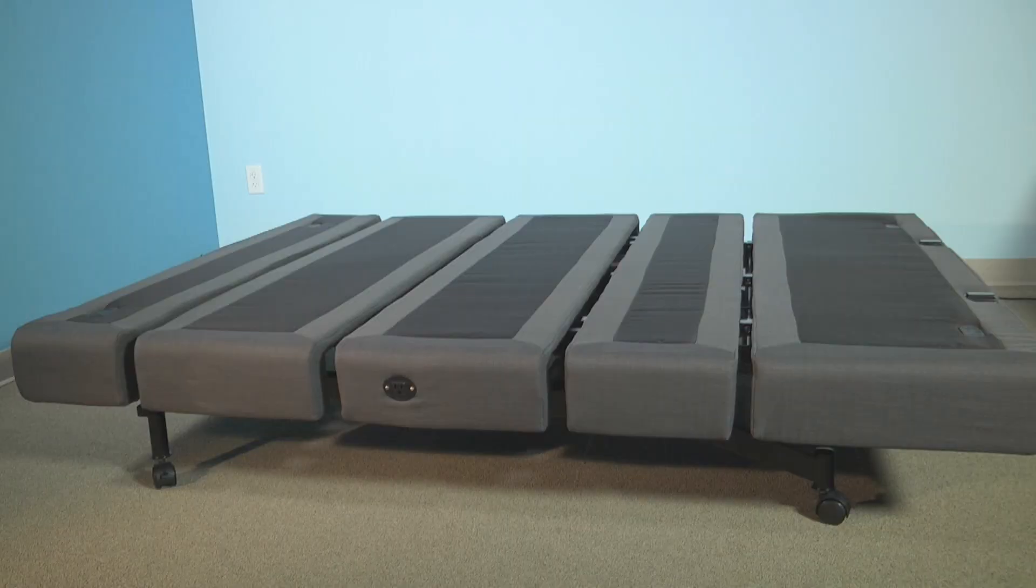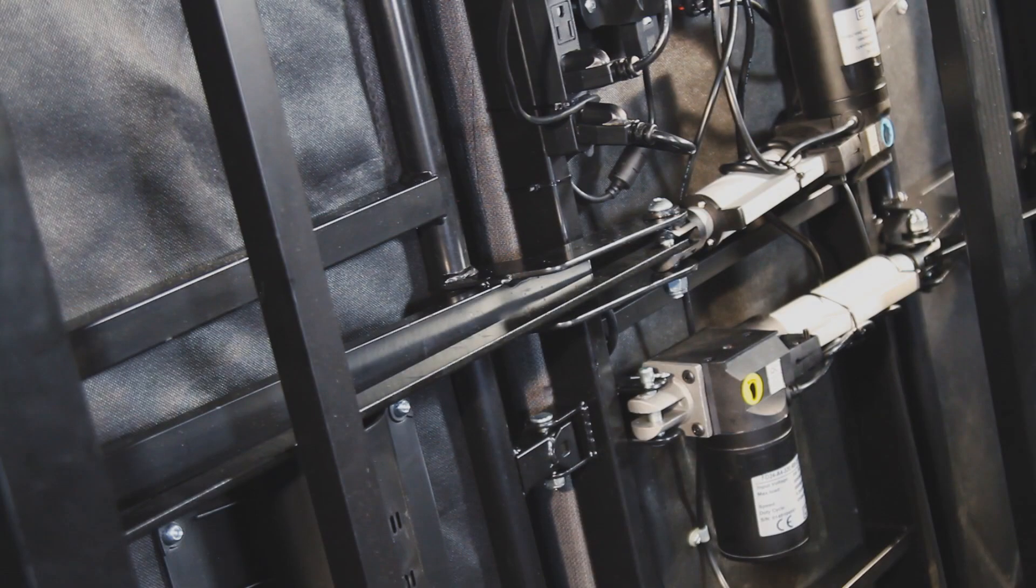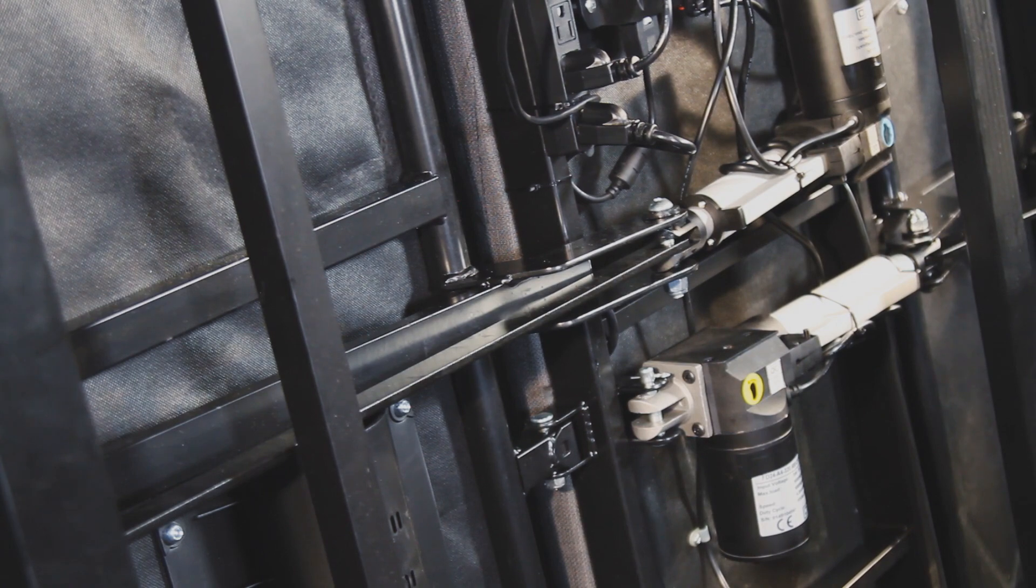If you try to replace the actuator while it is still on its feet and not resting on its side, when one end of the actuator is freed from the base, the deck section will drop down quickly. So make sure the platform is supported. That's why it's best to do this with the base on its side.